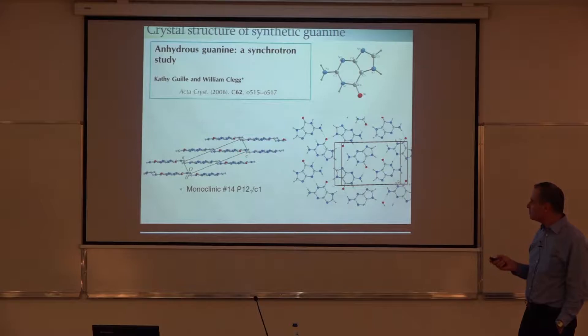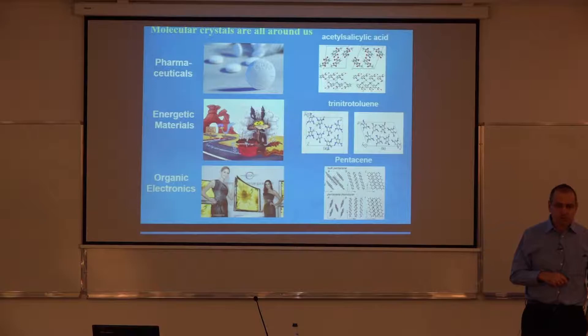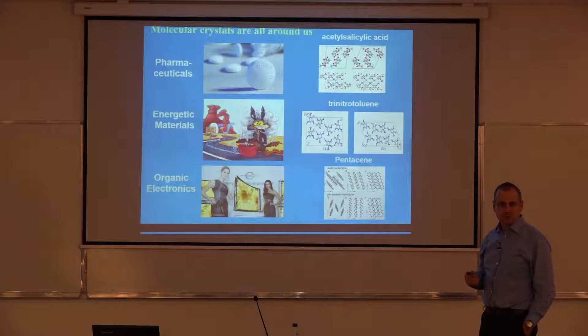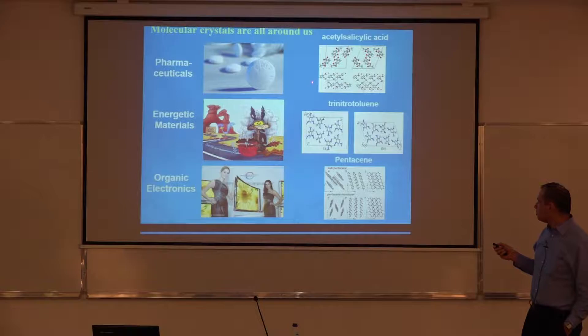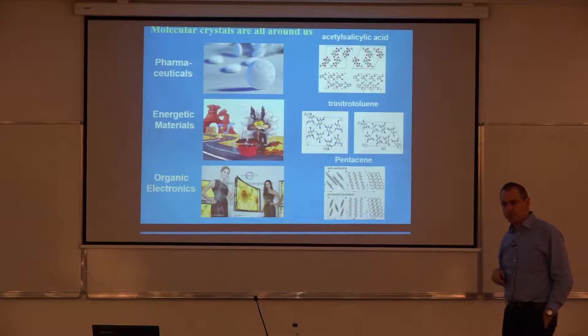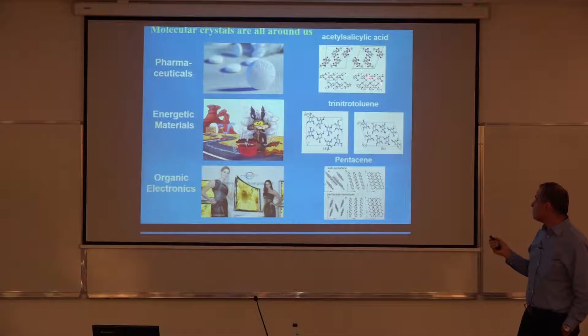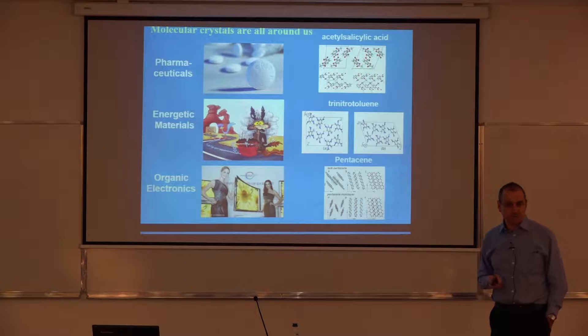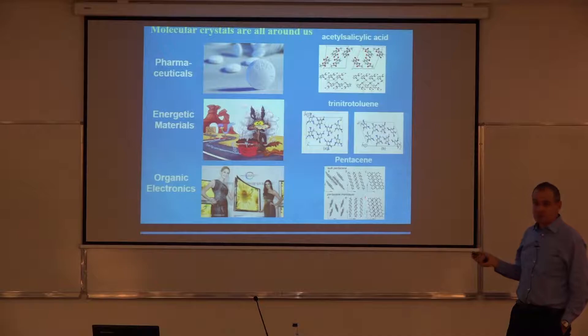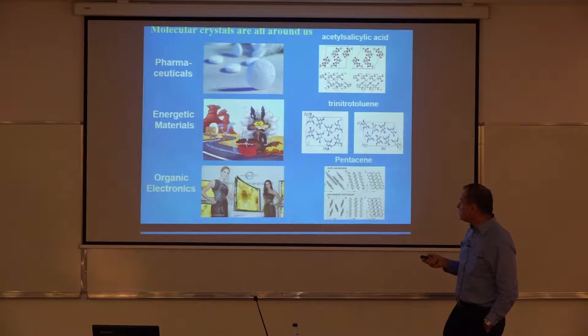One thing to keep in mind is that often in molecular solids you get more than one crystalline structure — this generally falls under the name of polymorphism. In all the examples I showed you, there were at least two different structures. It's very important to control the right polymorph. For example, in pharmaceuticals, whether it's one form or another will affect its solubility and therefore how effective it is medically. In energetics, it will affect the rate of explosion, and in organic electronics, it will affect electronic conduction. So it really matters.